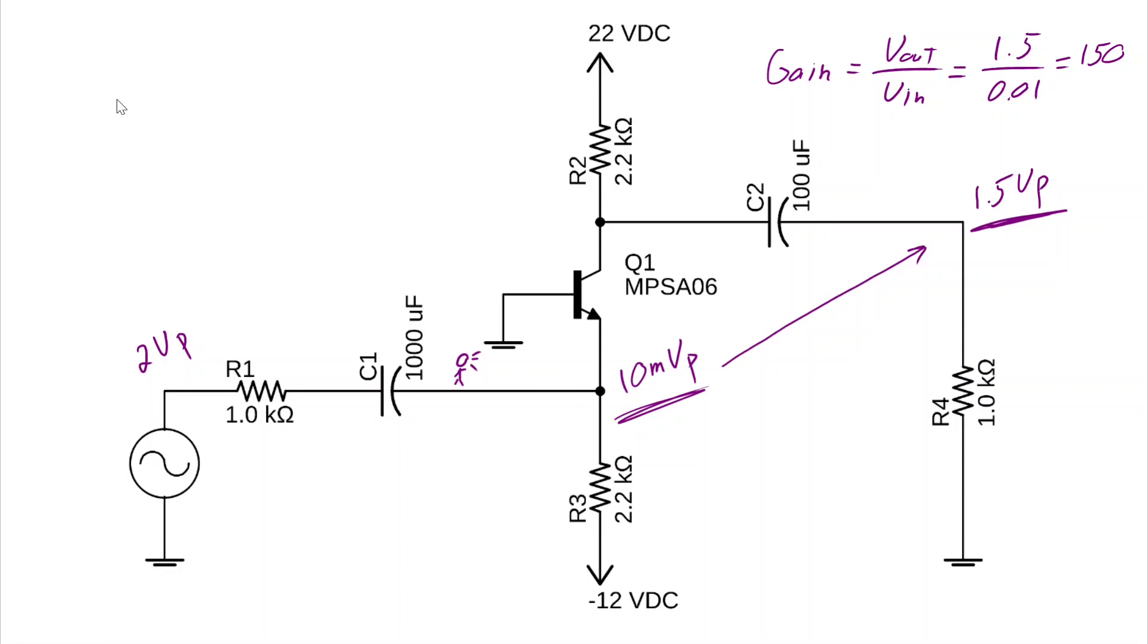Well, it goes something like this. 0.01 is equal to x over 1k plus x, all multiplied by 2. You may recognize that as the voltage divider. It basically says, if we have 2 volts in and we get this 10 millivolts peak out, well, what is the ratio of these two resistors?